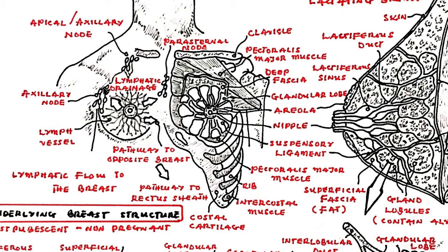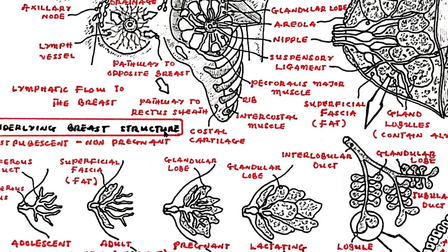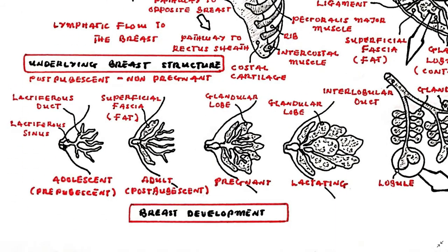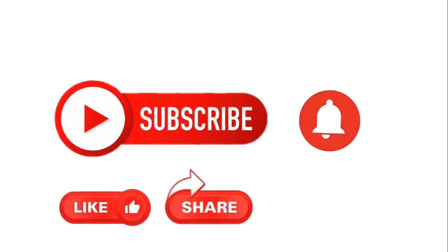The arrows indicate the potential lymphatic avenues for metastasis or spread of infection. The most common channel of spread is to the axillary lymph nodes, followed by the apical nodes and the parasternal nodes located alongside the sternum. In the average adolescent or prepubescent female, the developing breast possesses mainly lactiferous sinuses and ducts with minimal fat; as she develops into a post-pubescent adult there is substantial superficial fascia or fat, followed by development of glandular lobes during pregnancy, and enlargement of these lobes in the late stages of pregnancy and after delivery.